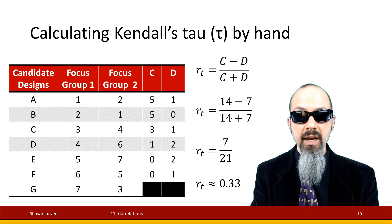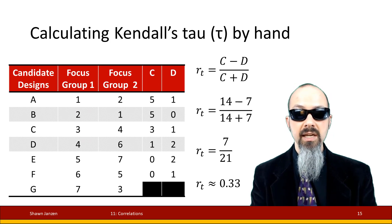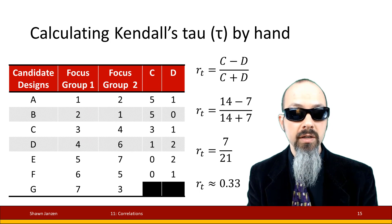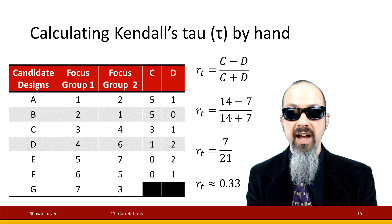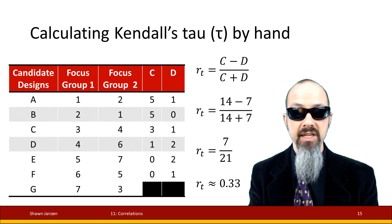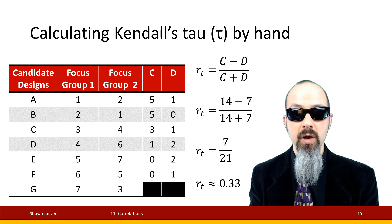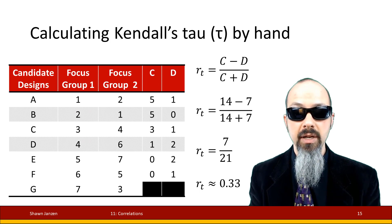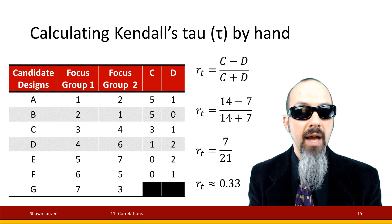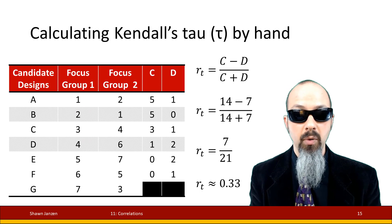Once I have those, I can calculate the tau value. C is the sum of all concordance values, and D is the sum of all discordance values. 5 plus 5 plus 3 plus 1 comes out to 14 — that's my value for C. 1 plus 1 plus 2 plus 2 plus 1 is 7 — that's my value for D. 14 minus 7 in the numerator is 7, and 14 plus 7 in the denominator is 21. Dividing that out, I have a tau value of approximately 0.33.